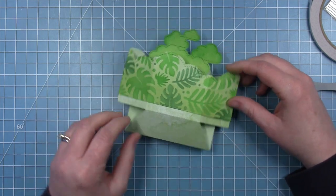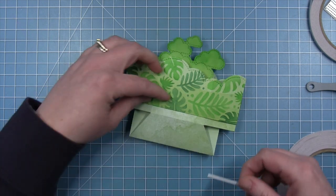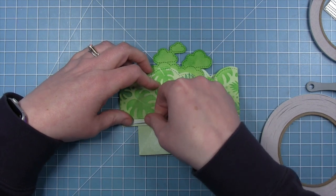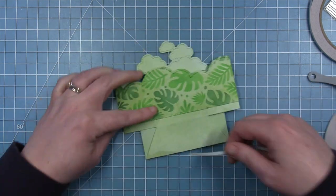Now to secure the wraparound, what I like to do is kind of push it up a little bit. Take some of my thin double sided tape and just put a line of that right along the bottom of the box on both sides.